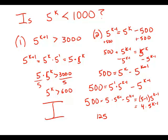Divide by 4, we get 125 equals 5 to the k minus 1. Well, 125, that's 5 to the third. So k minus 1 equals 3. k equals 4.